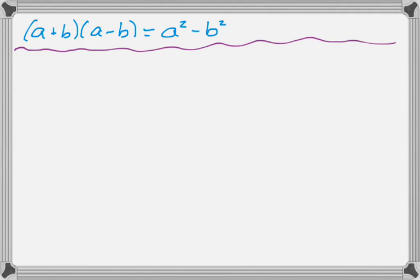So that's one of the special products. The next one is a plus b, a minus b. And that one simplifies really nicely to a squared minus b squared. The way I learned this was, you square the first.